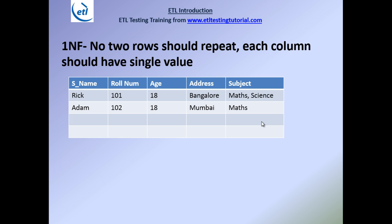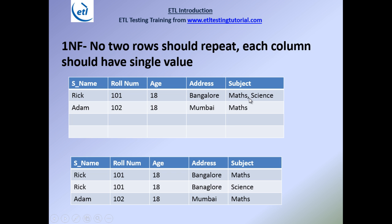So the first normal form says there should be no duplicate rows, and each column should have a single value. For example, if a subject column has 'Math, Science' as a comma-separated value in one cell, that is not allowed. Instead, you make separate rows — one row for Math and another row for Science. Each column should have only one discrete value.